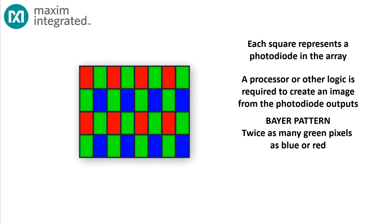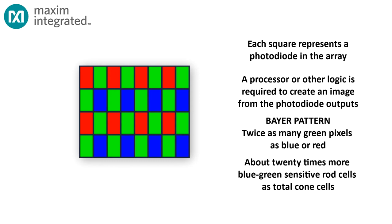In the Bayer pattern, there are twice as many green photoreceptors as blue or red. That's a nod to the rods — rods are most sensitive to light in the greenish-blue range, and it just makes sense to devote more sensor resolution to wavelengths at which the eye is most sensitive.